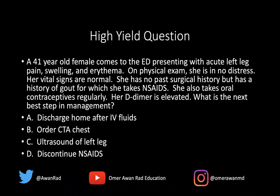This is a 41-year-old female who comes to the ED presenting with acute left leg pain, swelling, and erythema. On physical exam, she is in no distress. Her vital signs are normal. She has no past surgical history but has a history of gout for which she takes NSAIDs. She also takes oral contraceptives regularly. Her D-dimer is elevated. What is the next best step in management? Should we discharge her home after IV fluids, order a CTA of the chest, ultrasound her left leg, or discontinue the NSAIDs?